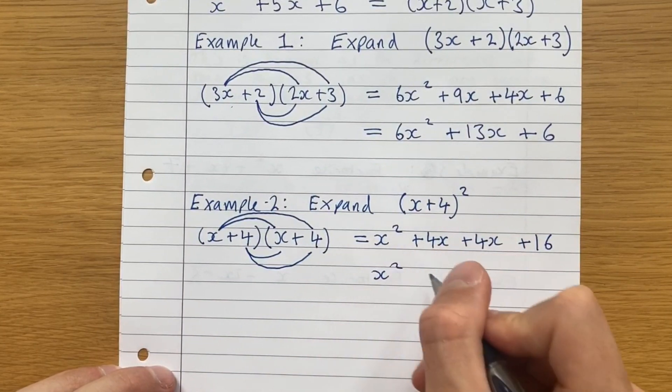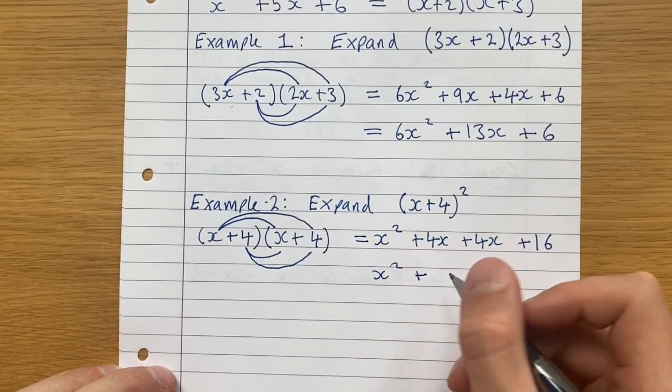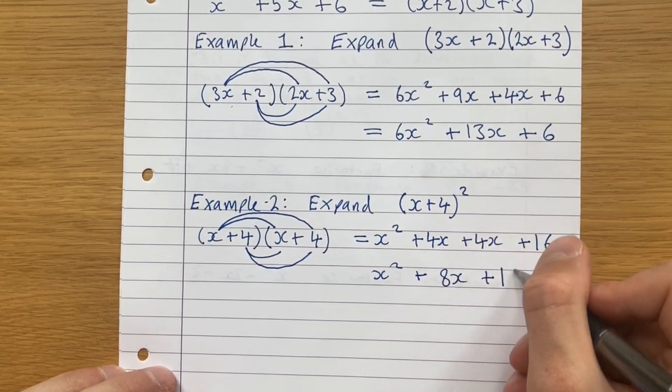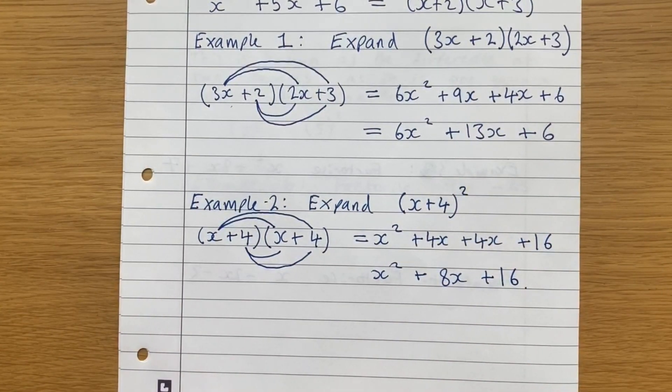This simplifies to x squared plus 4 plus 4x, 4x plus 4x, 8x plus 16. And that is that.